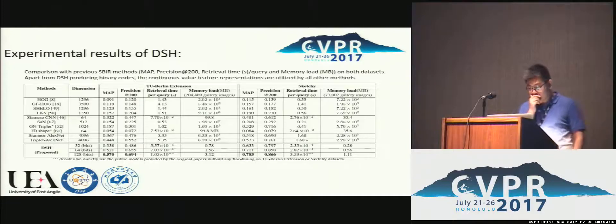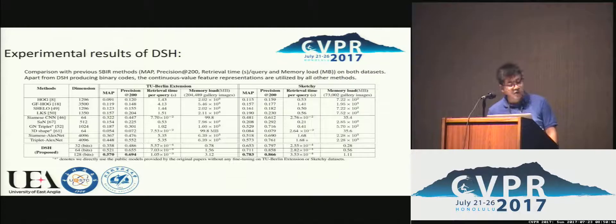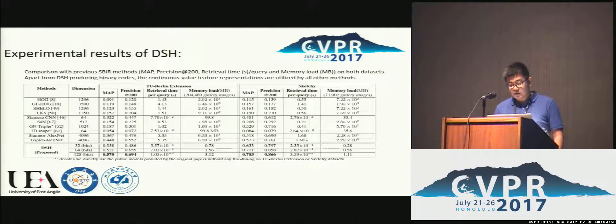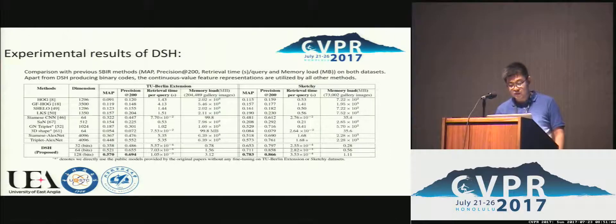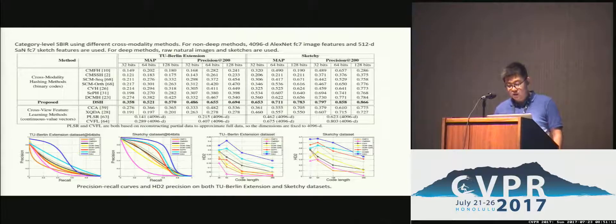In our experiments, we used two datasets including two TU-Berlin extensions and Sketchy. We compare with previous SBIR methods in terms of MAP, precision, retrieval time, and memory cost. In all baselines, continuous value features are utilized. Using as few as 64 bits, the proposed DSH method achieves the best performance with the least query time and memory cost. Moreover, we compare DSH with cross-modality and hashing methods, and DSH achieves the best performance. We also visualize the coding results, where images and sketches from similar categories are grouped together.